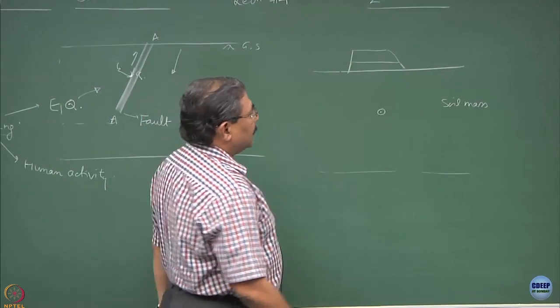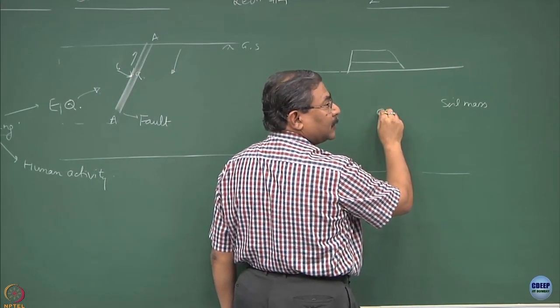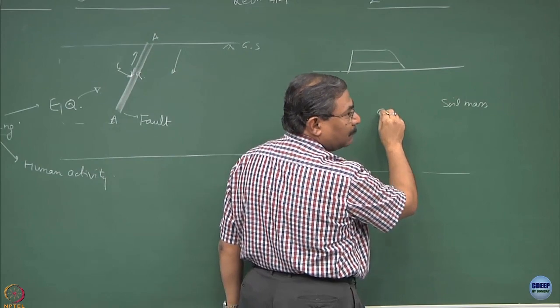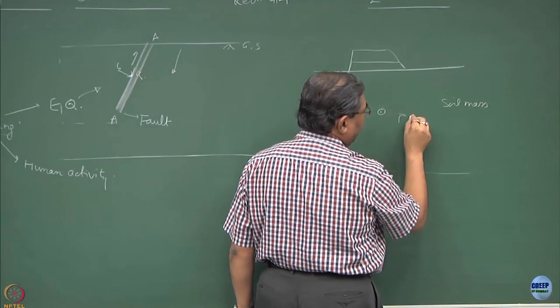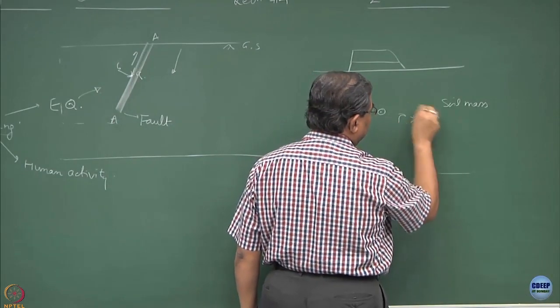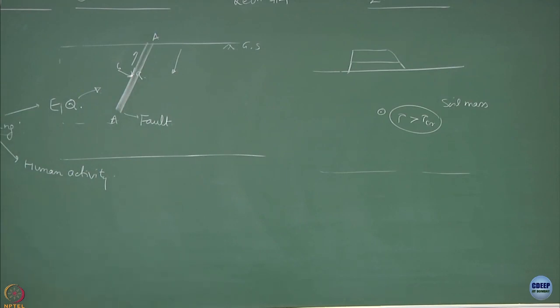Now if this type of situation occurs, the chances are if this happens to be a weak plane, the shearing will take place and the system will collapse. Weak plane definition in mathematical form would be tau greater than tau CR.